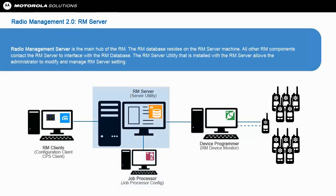Radio Management Server is the main hub of the RM. The RM database resides on the RM server machine. All other RM components contact the RM server to interface with the RM database. The RM server utility installed with the RM server allows the administrator to modify and manage RM server settings.